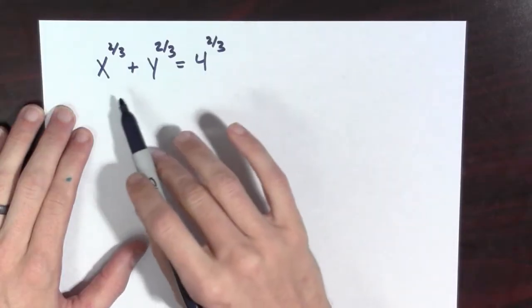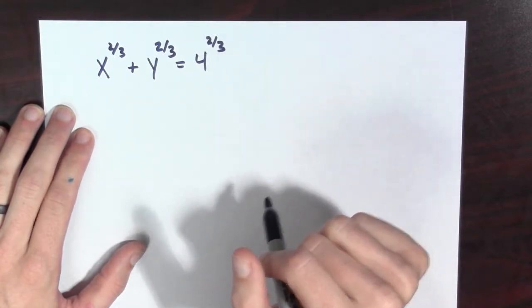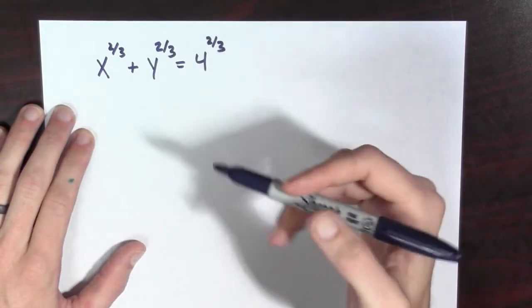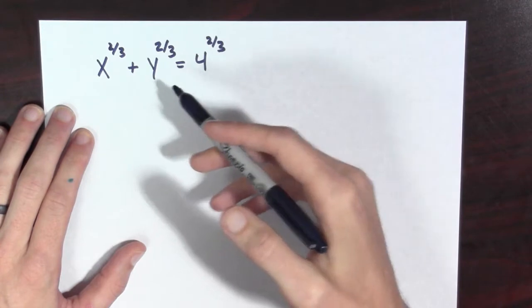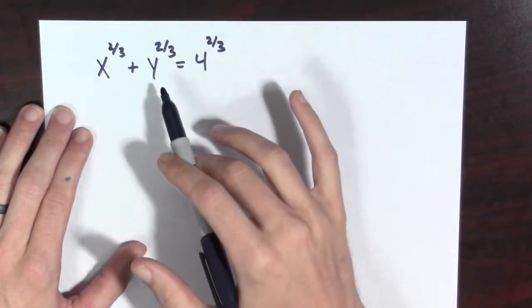So we start with the equation that defines the relation between x and y, and now we'll differentiate both sides, implicitly assuming that y is a function of x.